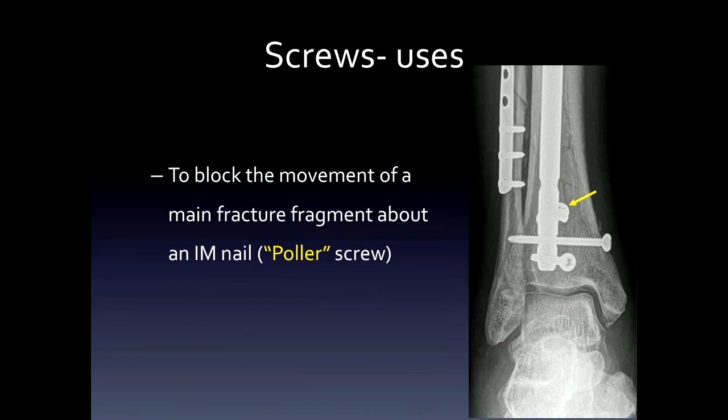Finally, the polar screw blocks the movement of a main fracture fragment about an intramedullary nail. This screw will not go through any of the holes in the intramedullary rod — it's next to the rod, as you see here.